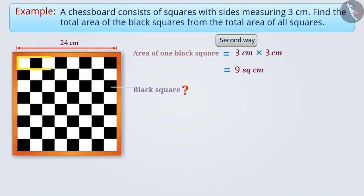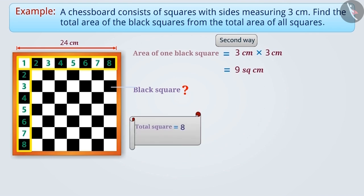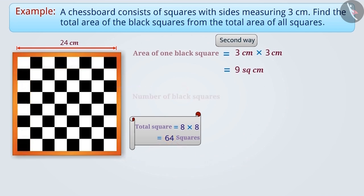On a chessboard, each row has 8 squares and similarly each column has 8 squares. Therefore, the total number of squares on a chessboard is 8 multiplied by 8, equal to 64 squares. Half of these are white squares and half are black squares. So the total number of black squares will be 64 divided by 2, equal to 32.